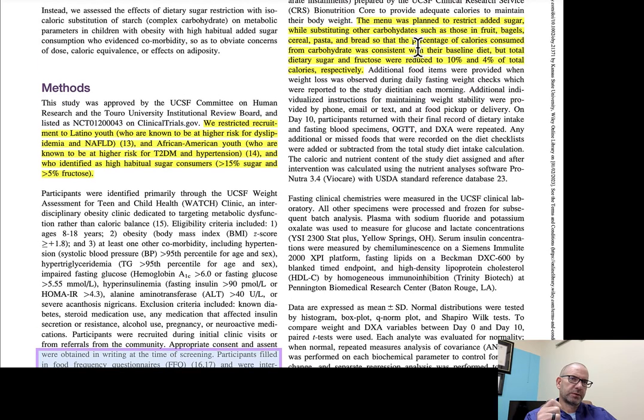The menu was planned to restrict added sugar while substituting other carbohydrates, such as those in fruit, bagels, cereals, pasta, and bread, so that the percentage of calories consumed from carbohydrates was consistent with their baseline diet. But total dietary sugar and fructose were reduced to 10% and 4%, from greater than 15% and greater than 5% of total calories, respectively. So they were still eating sugar, still eating fructose.